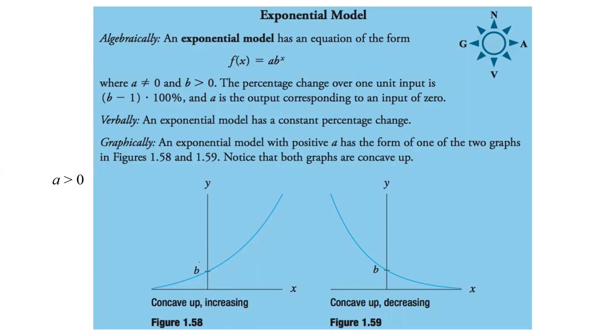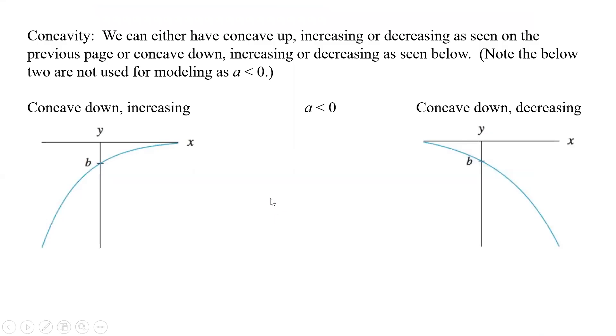Graphically, an exponential model with positive a has the form of one of the two graphs. So now we're looking at the two graphs where a is greater than 0. And so what happens is, we can go and say, concave up, it's increasing, or concave down, it's decreasing. And again, this one is going to, when you have your b is going to actually be less than 0.